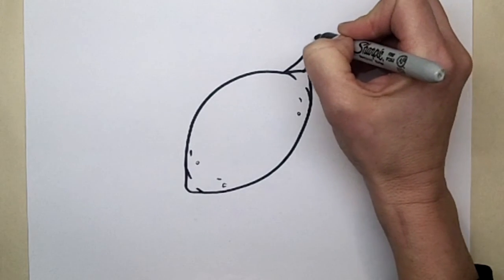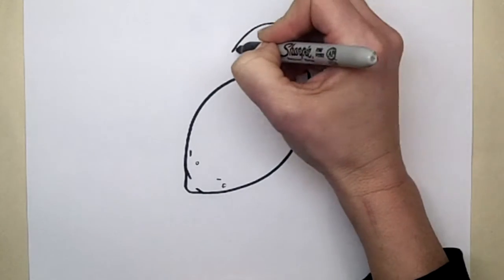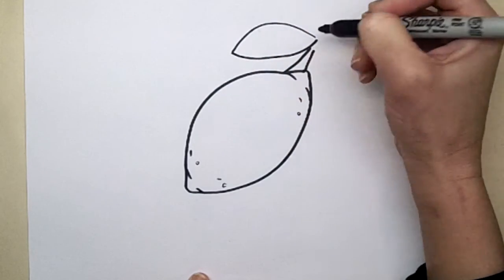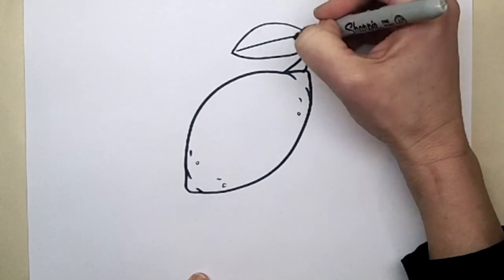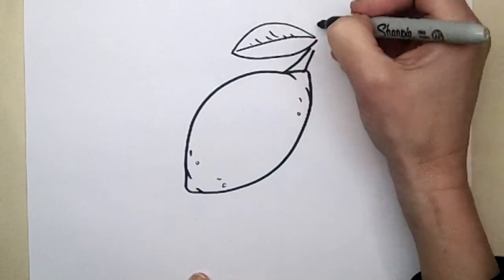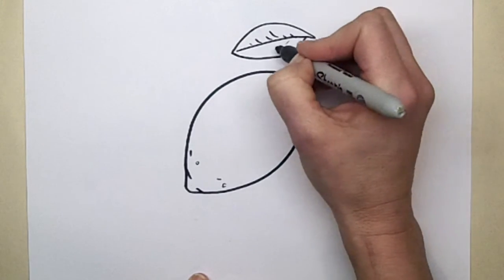And a lemon leaf is just a nice, simple shape. There's nothing tricky here about a lemon leaf. And we could draw in some of the veins on the leaf. Not too many, it's a cartoon.